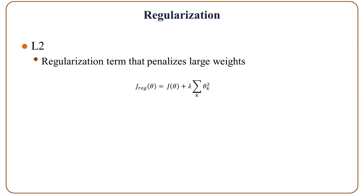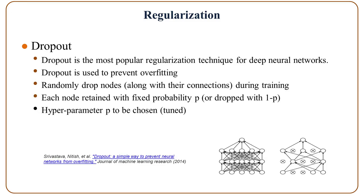L2 regularization is a common method — it penalizes large weights. Dropout is another, and is the most popular regularization technique for deep neural networks. It is used to prevent overfitting by dropping nodes and connections during training. Each node is retained with a fixed probability p, or dropped with probability 1-p, where p is a hyperparameter to be chosen.